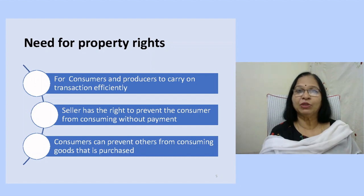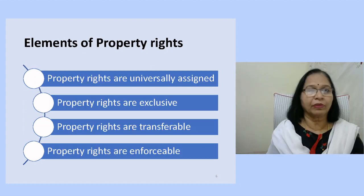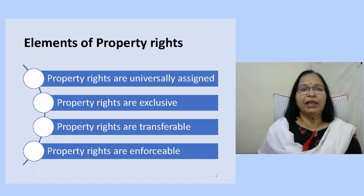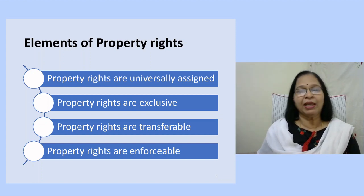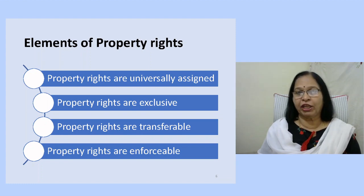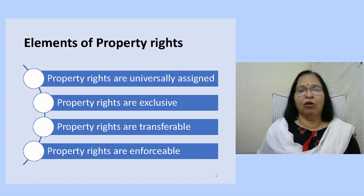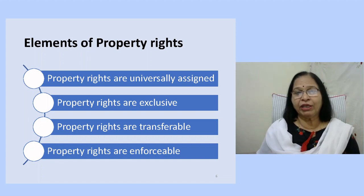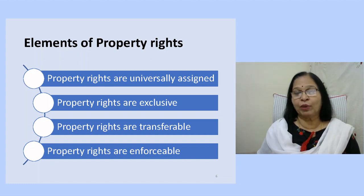Let's look at the elements of property rights. The first element is transferability — all full property rights owners can sell, lease or rent out their property to anyone of their choice based on economic rationale. If you apply this to environmental resources like forests, rivers or air, we find that we cannot rent out, sell or lease these rights to anyone because no one owns these resources.